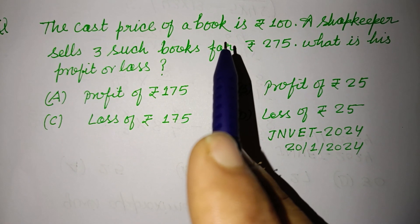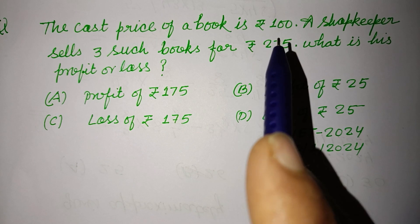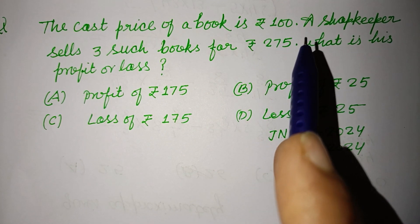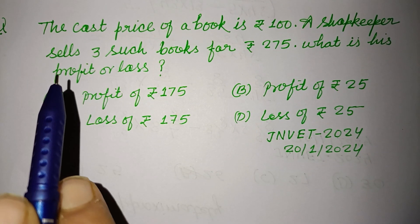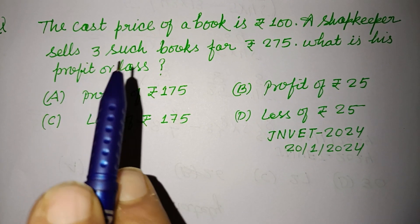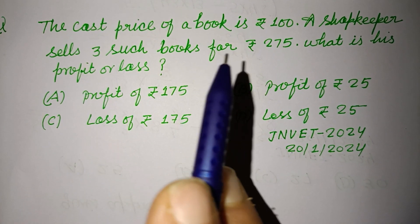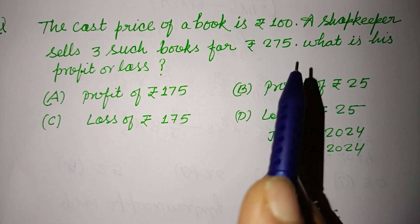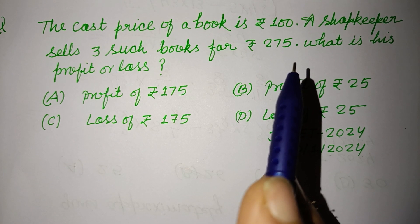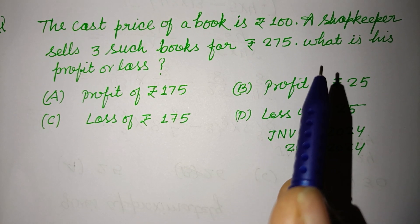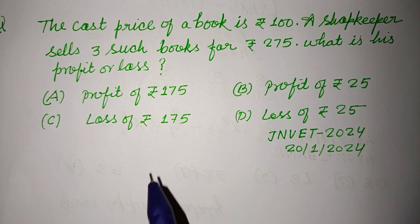The cost price of a book is Rs. 100. A shopkeeper sells 3 such books for Rs. 275. What is his profit or loss?